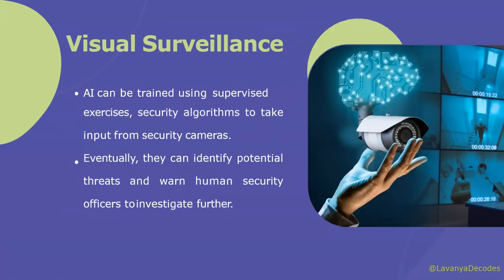Next is visual surveillance. AI can be trained using supervised exercises — for example, security algorithms that take input from security cameras or CCTV cameras. They can identify potential threats and warn human security officers to investigate further. Surveillance cameras and facial recognition are used to monitor public and private spaces and to identify people, becoming both more pervasive and more invasive. Examples of visual surveillance include binoculars, telescopes, cameras with telephoto lenses, video recorders, and CCTVs.